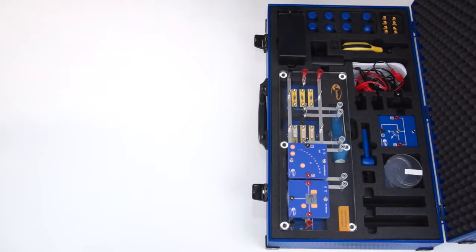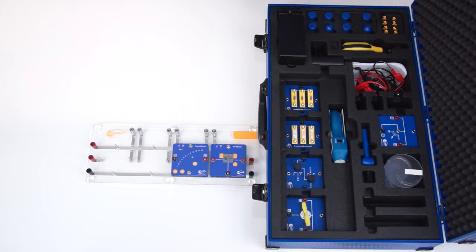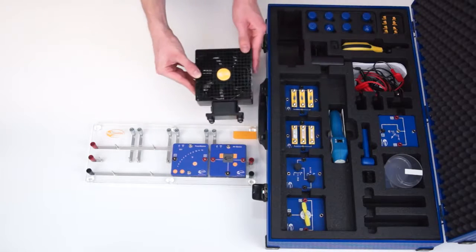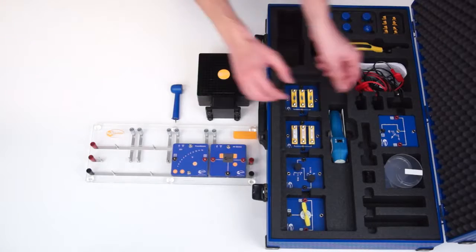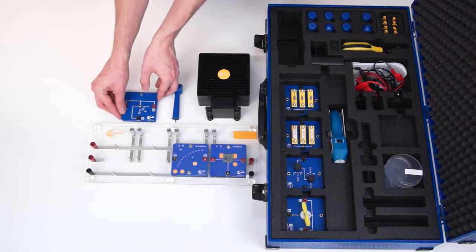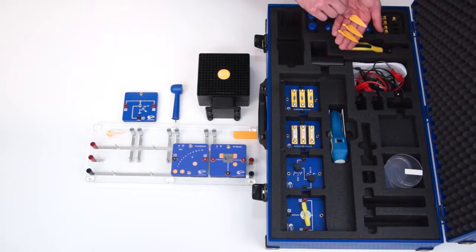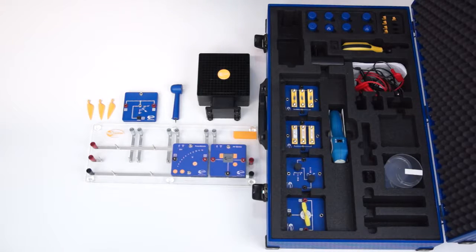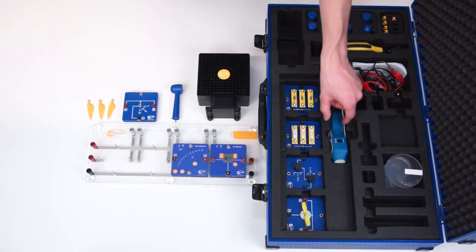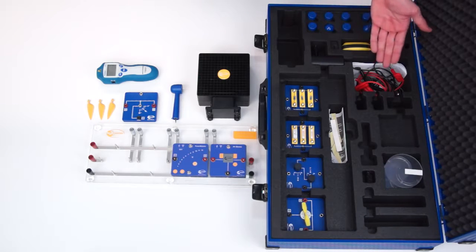For this experiment we need the Professional Base Unit with the Smart Control Components AV Module and Power Module, the wind machine, the wind turbine with module plate, three blades, the hubs for the three blades with different angles, the hub cover, the rotational speed sensor, a power supply, and cables and short circuit plugs.